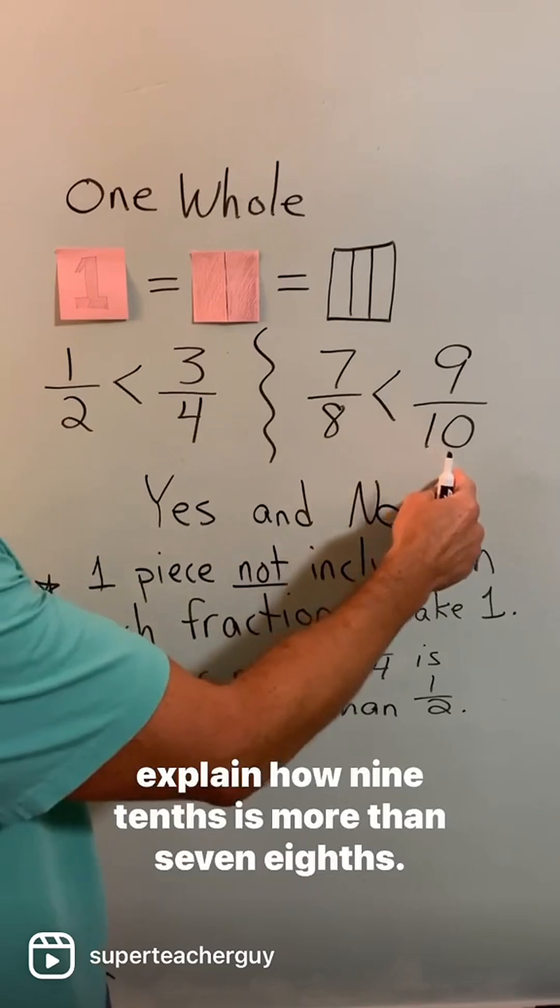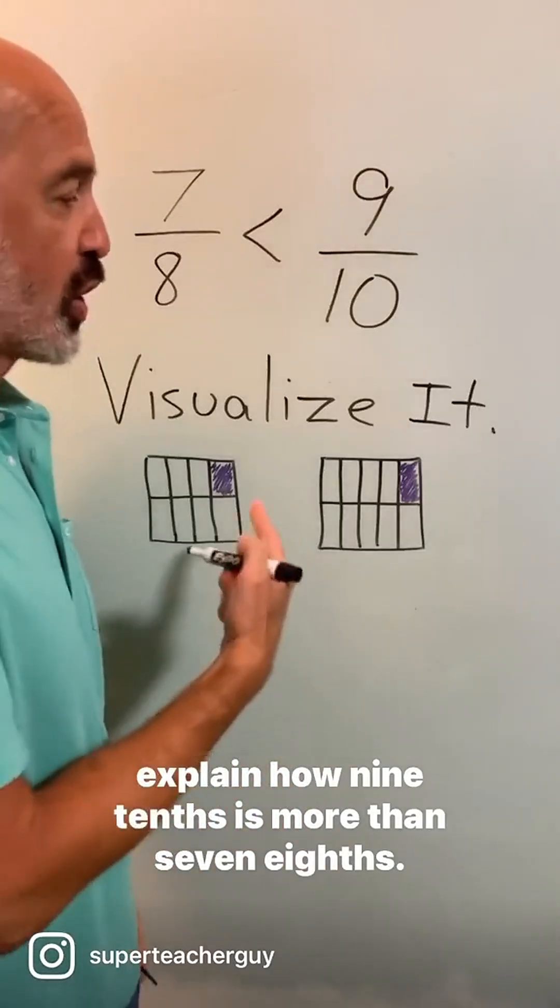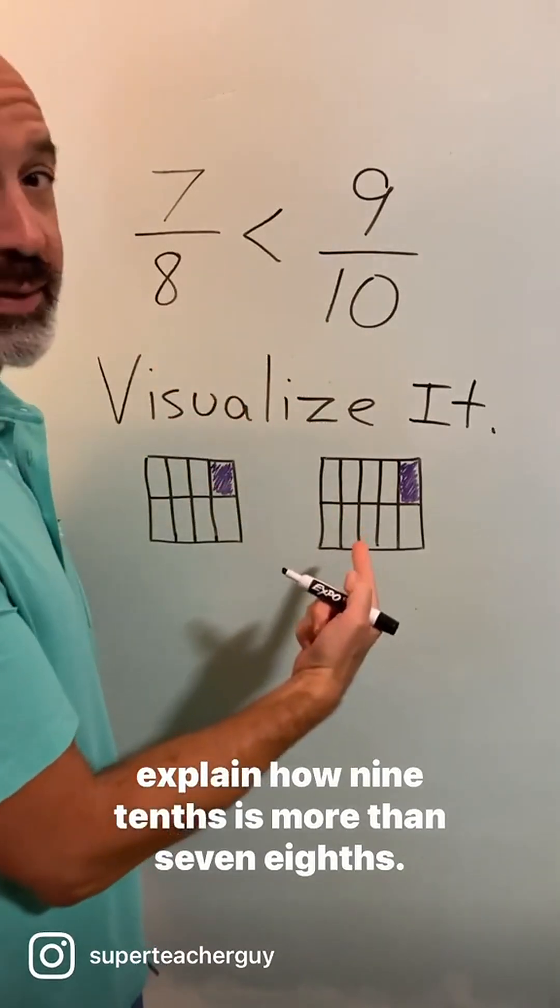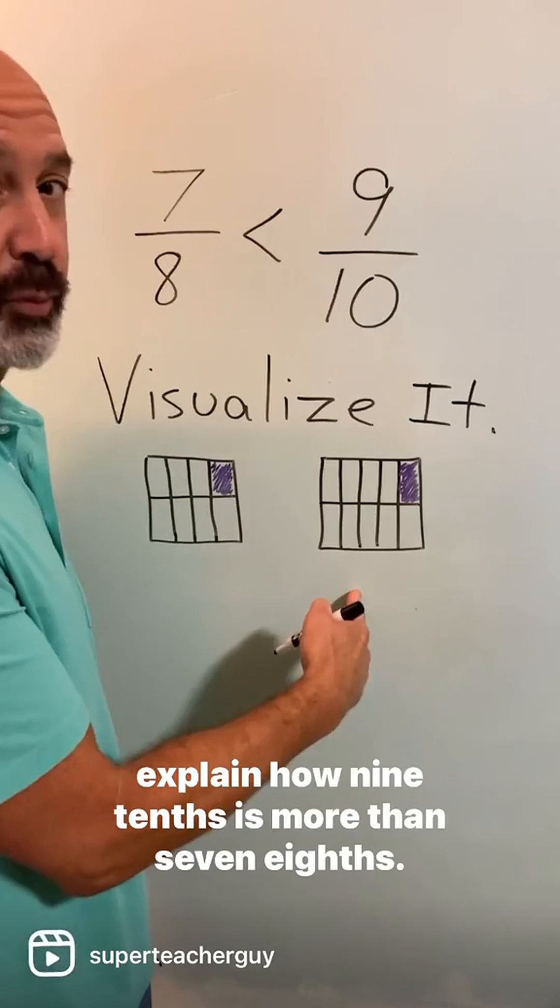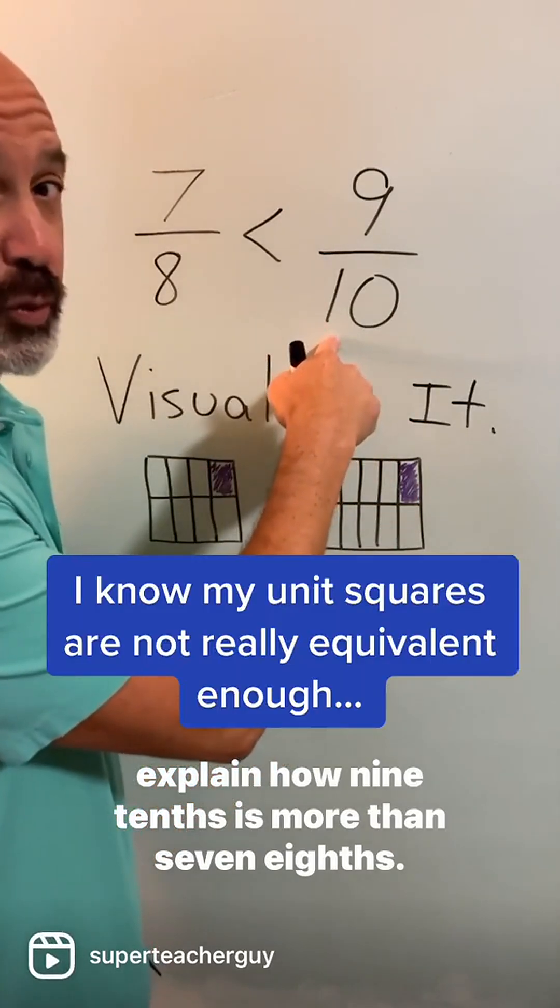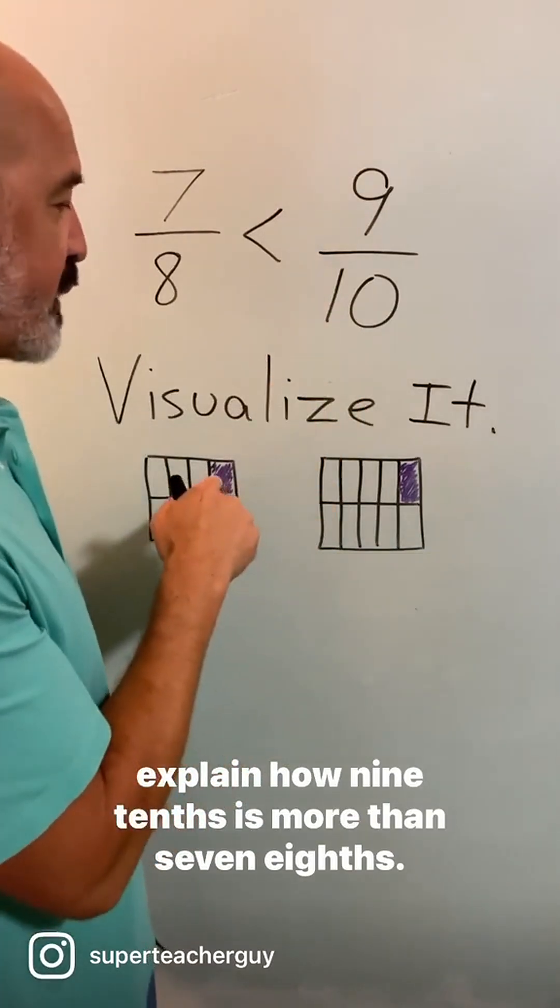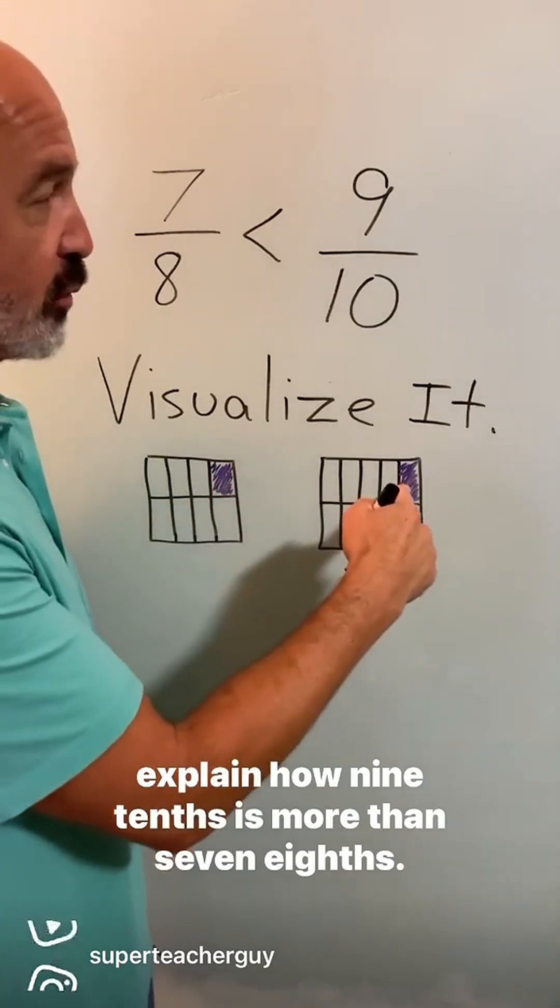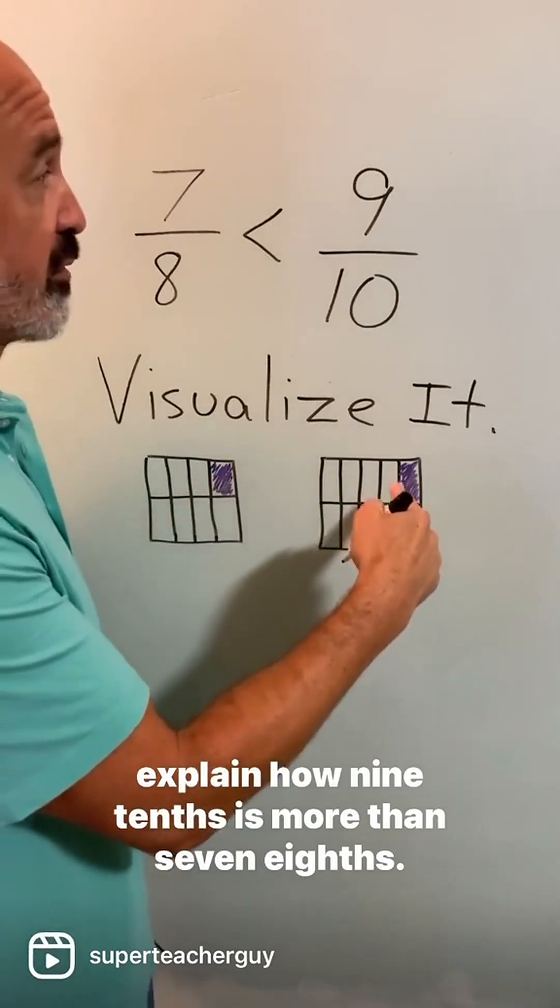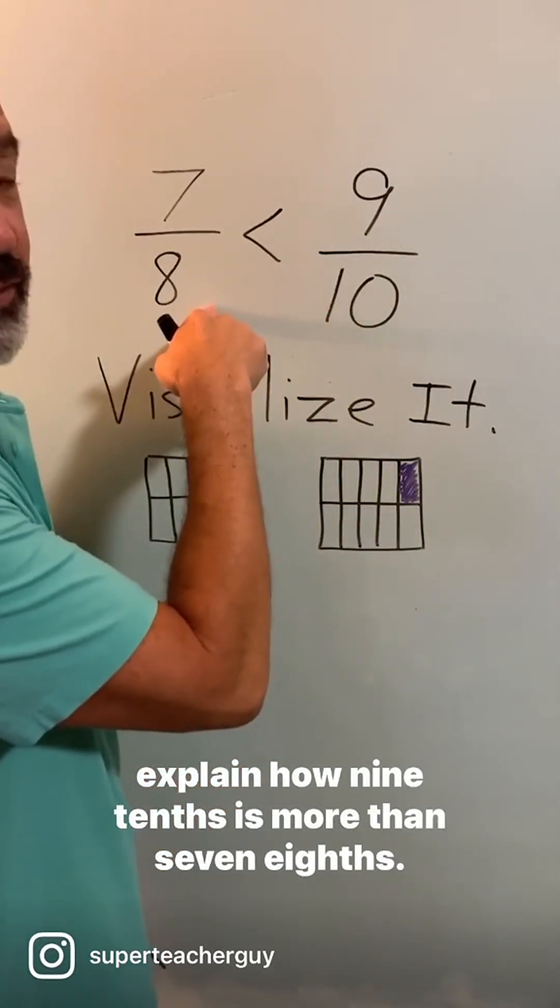But in our minds we can't really explain how nine-tenths is more than seven-eighths. So by drawing seven-eighths and nine-tenths, seeing concrete examples, we can start to visualize these fractions that are more confusing and the child can see that one-eighth is larger than one-tenth. So therefore nine-tenths altogether filled in will be more than the seven-eighths.